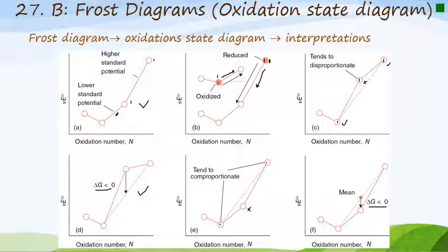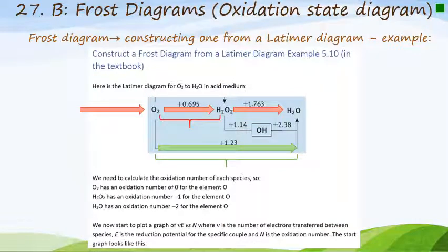To understand what's going on, the easiest approach is to do an example. The example asks us to construct a Frost diagram from a Latimer diagram — example 5.10 in the textbook. We are looking at the movement from oxygen to hydrogen peroxide to water, and also the full pathway from oxygen all the way through to water.